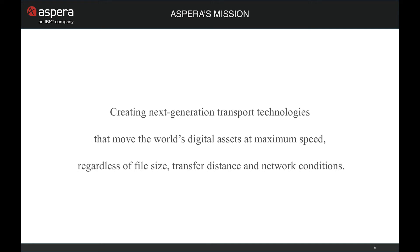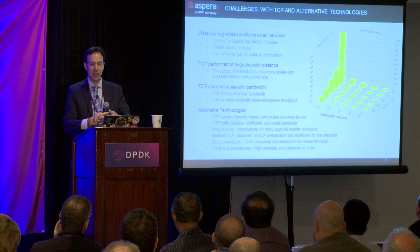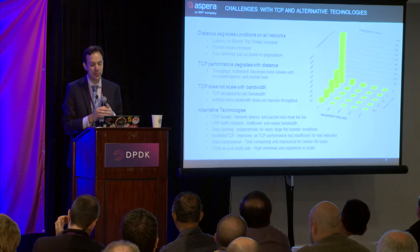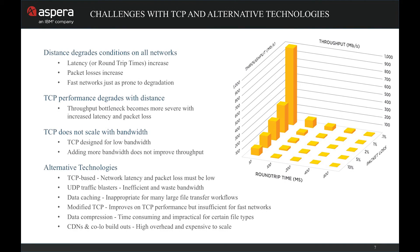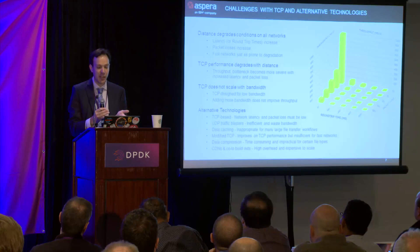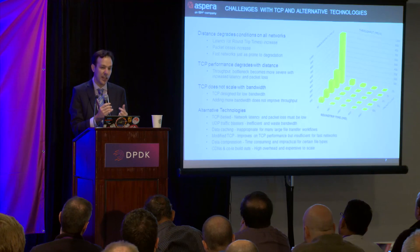To give some background on what Aspera is and the problem we're solving: if you look at normal network technologies like TCP, throughput is limited by round-trip time and packet loss — a function of the sliding window size and acknowledgement mechanism. As round-trip time or packet loss increases, maximum throughput decreases. There are a number of solutions attempting to get around that bottleneck, and our technology addresses this directly.